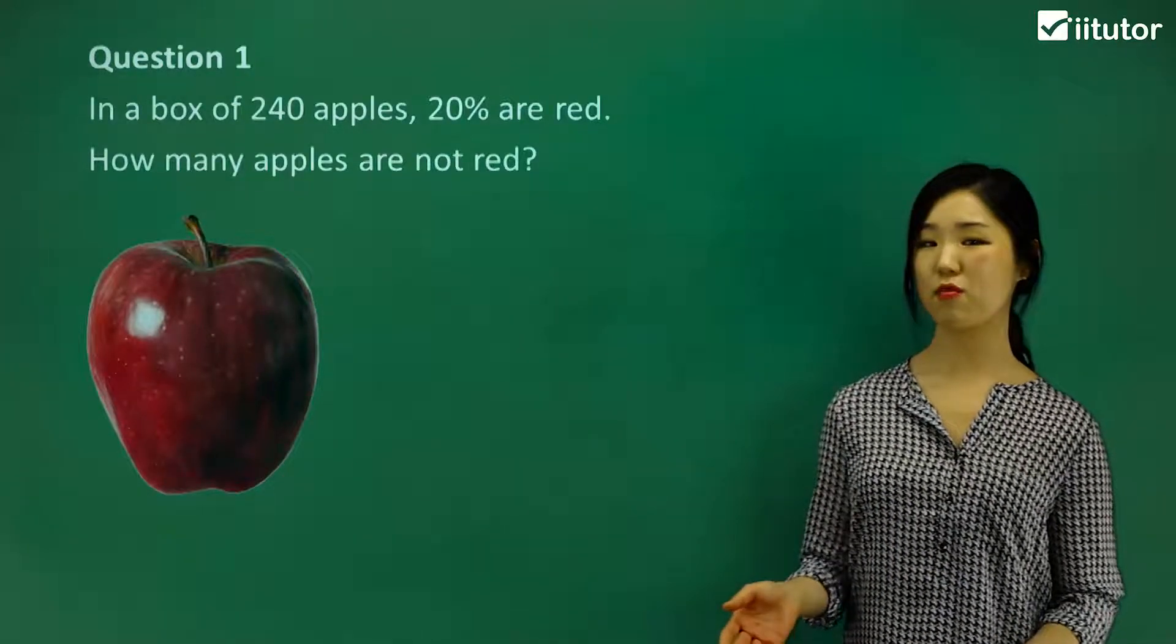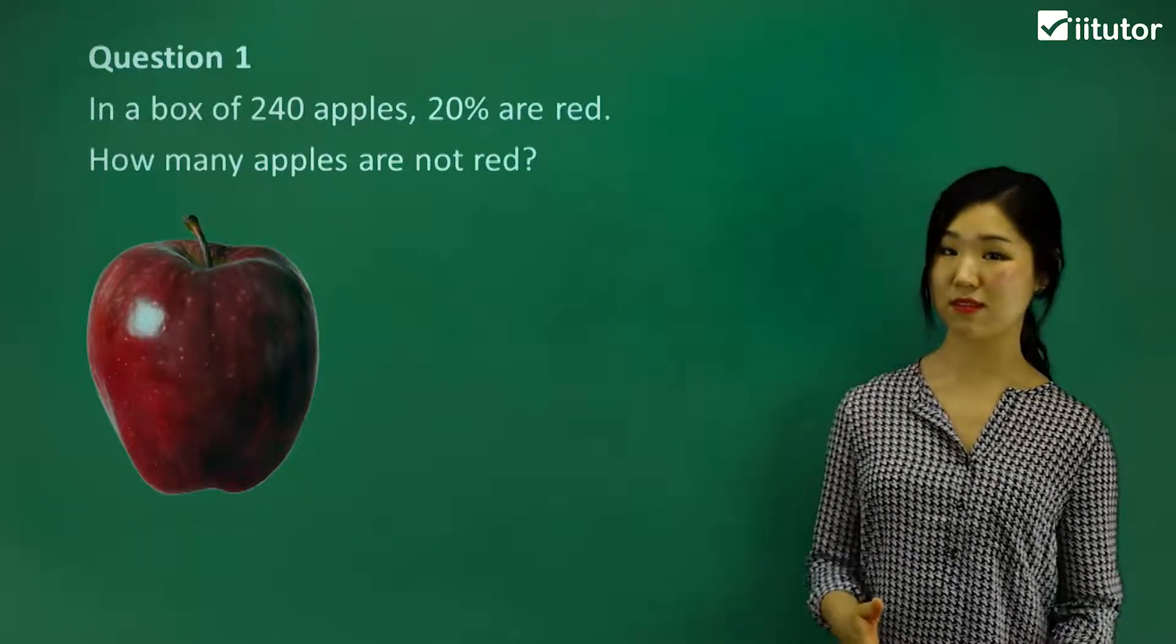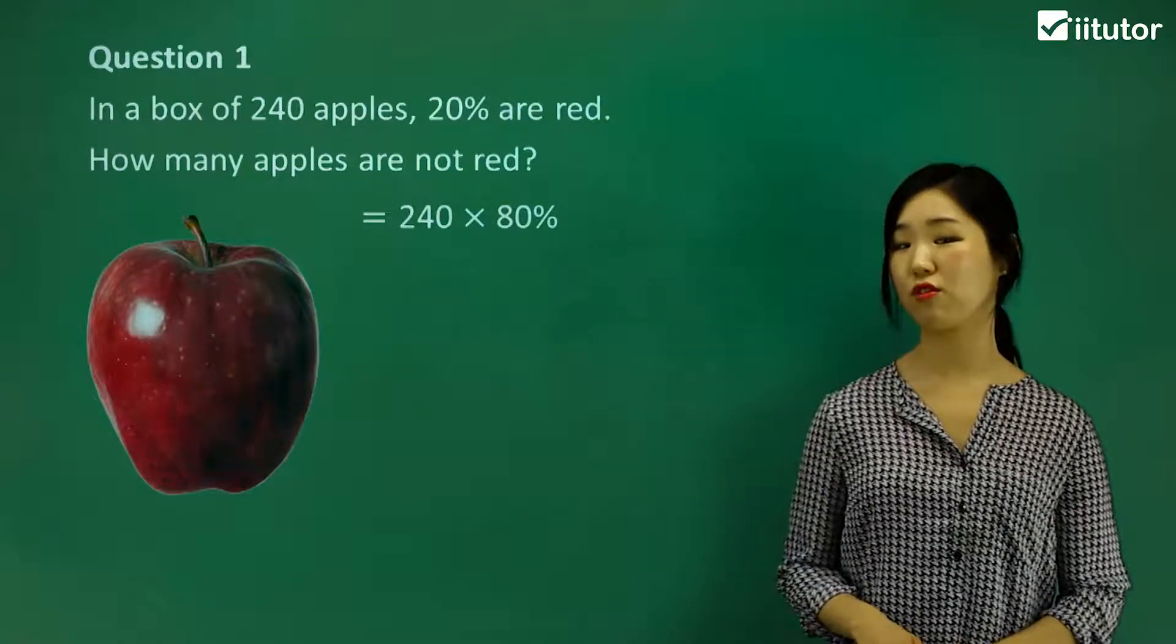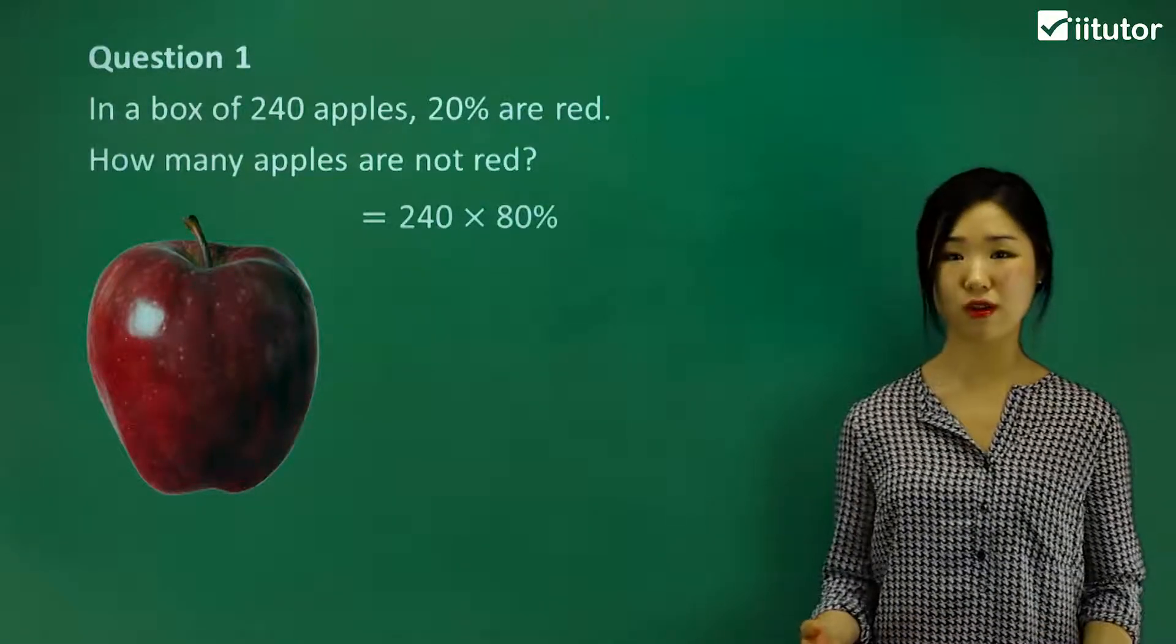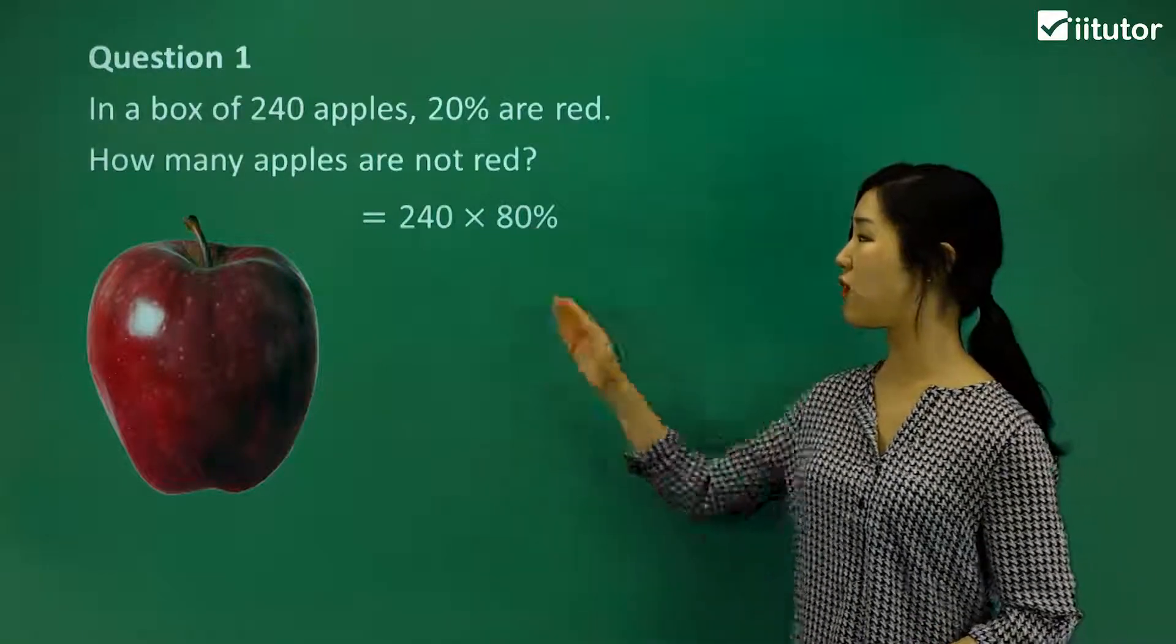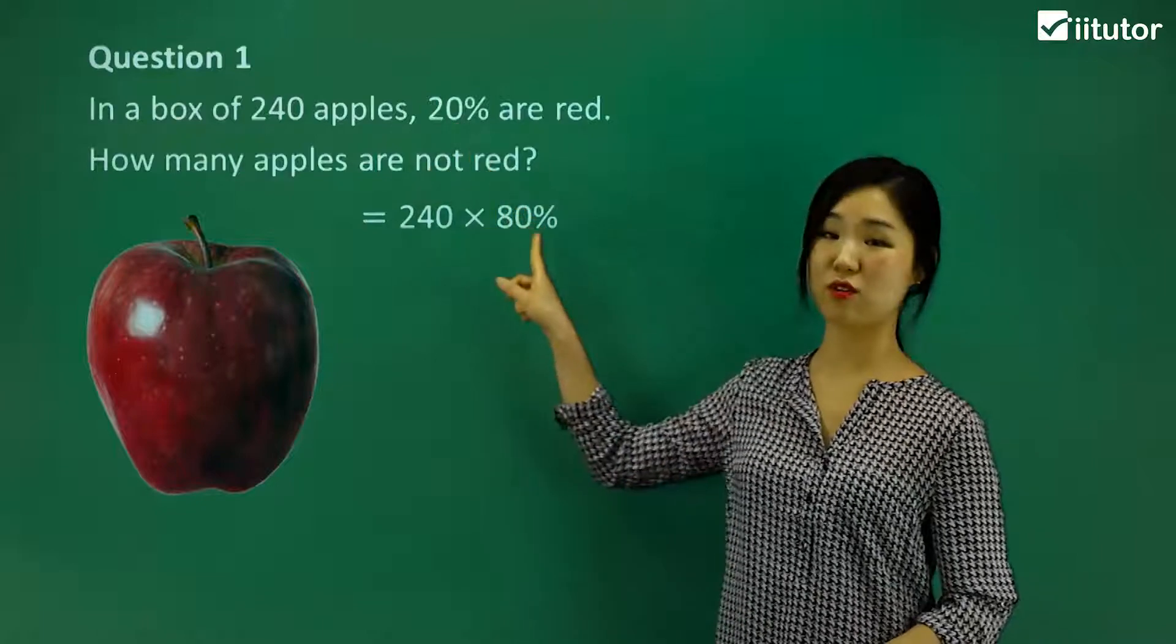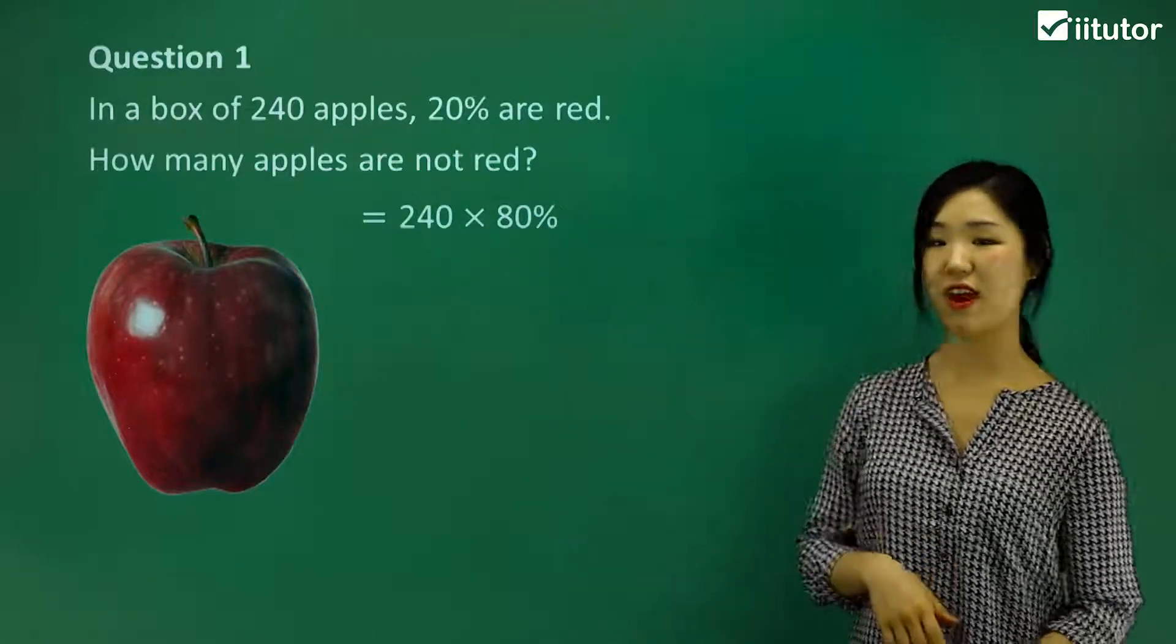Well, if 20% are red, that means the remaining 80% are not red. So we'll multiply 80% of the 240 to calculate how many are not red. Figure out what percentage are not red. That's just 100% minus the 20%. And then just do the calculation.